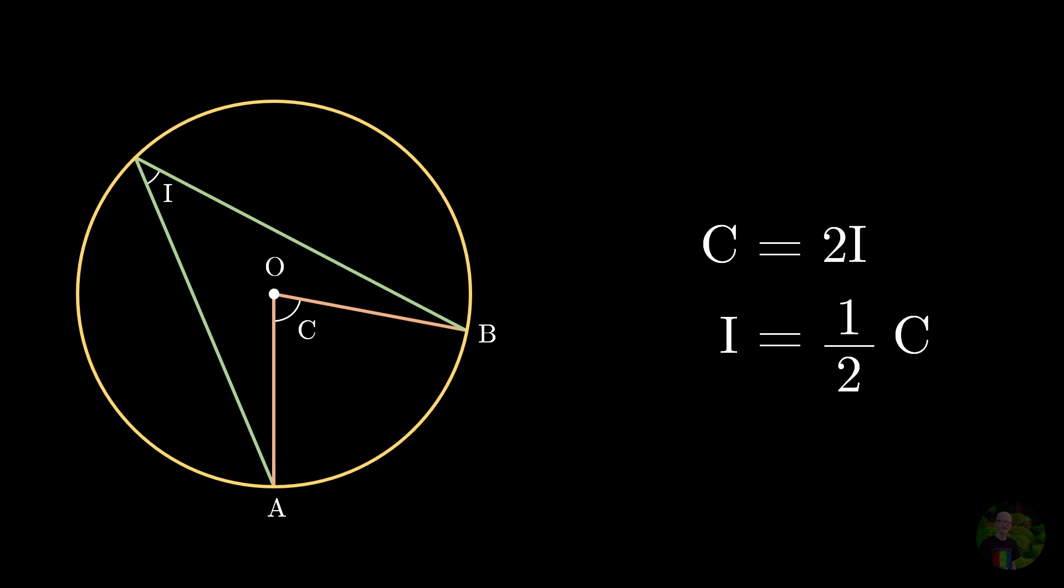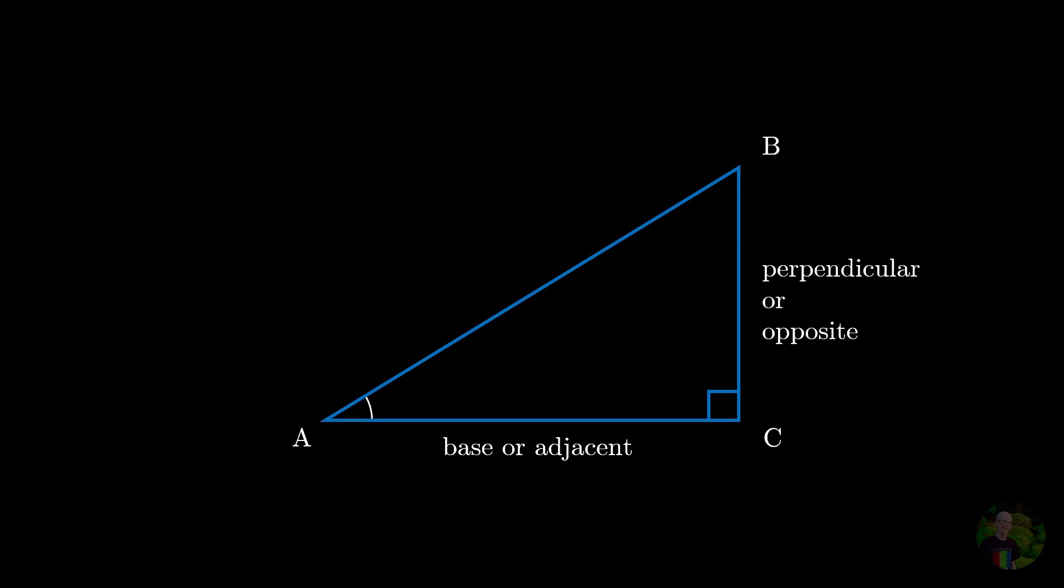Now that you have recalled this, we will also recall the trigonometric ratios for sine and cosine for a right-angled triangle. So let that triangle be ABC. And if we make the reference angle as angle A, then AC will be our base or the adjacent side, BC will be the perpendicular or the opposite side, and AB will be the hypotenuse.